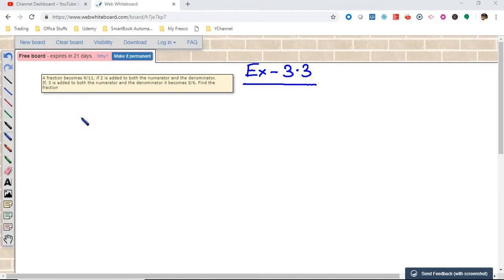The first sum is that a fraction becomes 9 by 11 if 2 is added to both the numerator and denominator. So when 2 is added to both numerator and denominator, the fraction becomes 9 by 11. We have the result but we don't have the fraction. And if 3 is added to both numerator and denominator, it becomes 5 by 6. So find the fraction, that is the question.